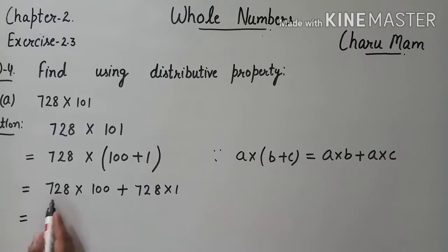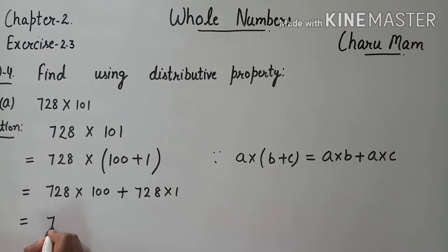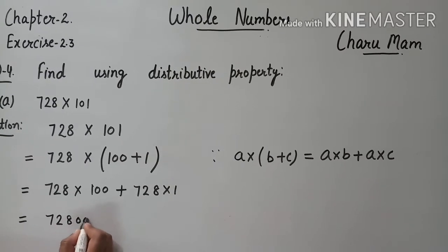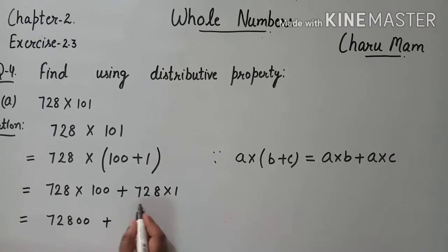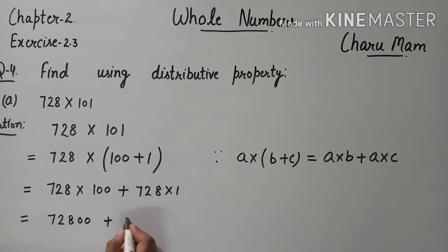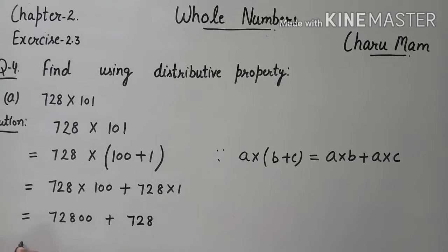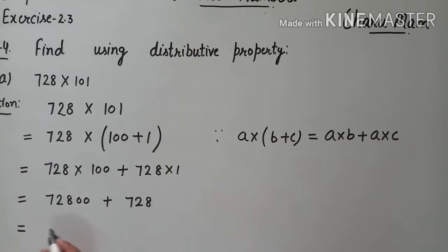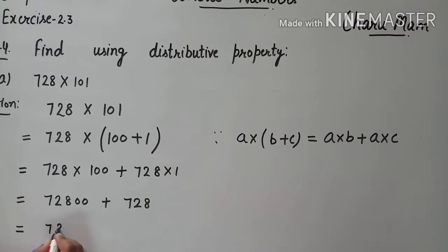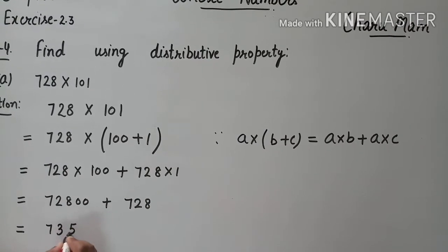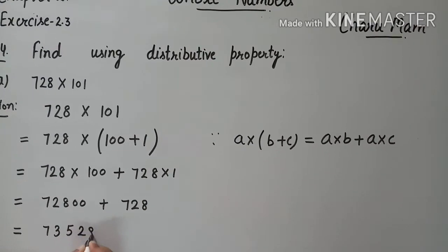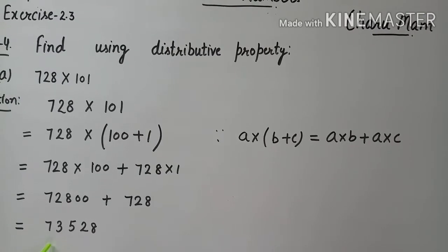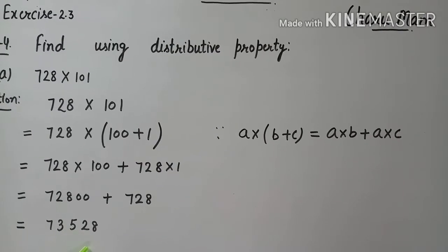अब हम इन दोनों को multiply करेंगे, then plus, फिर हम 728 को 1 से multiply करेंगे. अब हम इन्हें plus करेंगे. तो plus करके क्या आया? 73,528.